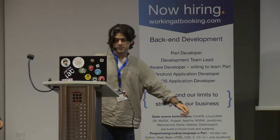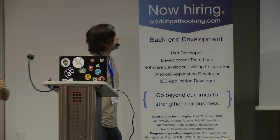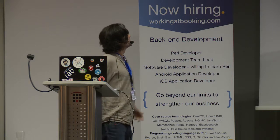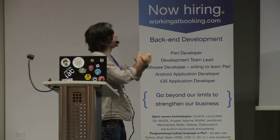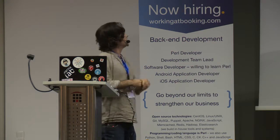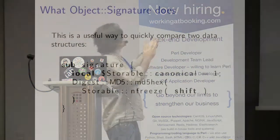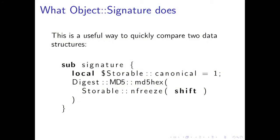I'm going to talk about Object::Signature::Portable. Object::Signature is used in various modules — this is basically how it generates signatures of data structures.